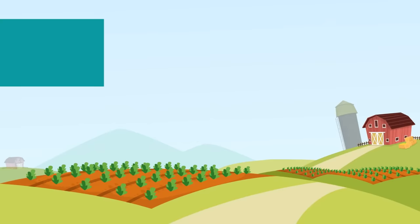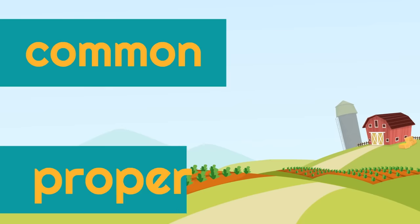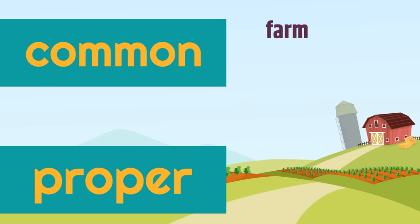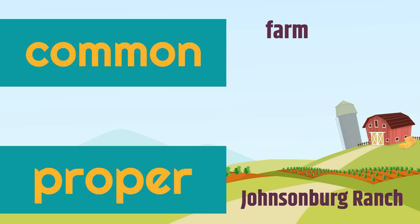Let's look at two more examples. This is a picture of a farm. Farm is the common noun, and notice it's got a lowercase letter — it's the type of thing that this is. Now, the name of the farm is Johnsonburg Ranch. So that's the proper noun — it's the specific farm that it is. Johnsonburg Ranch is capitalized because it's a proper noun. It's the specific thing that it is.